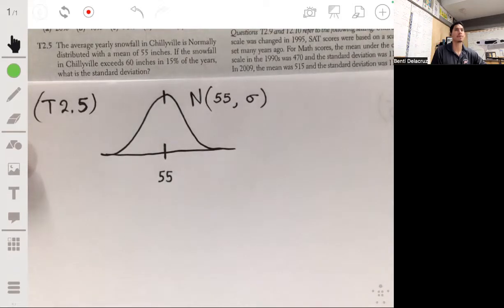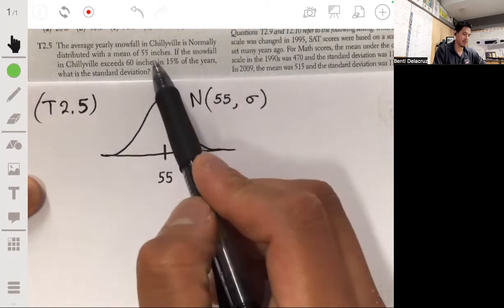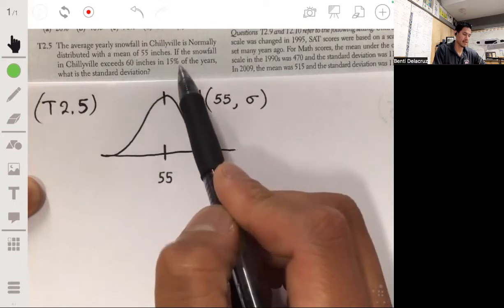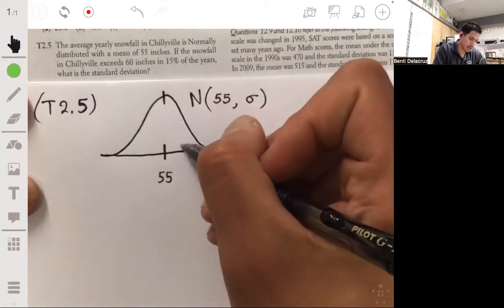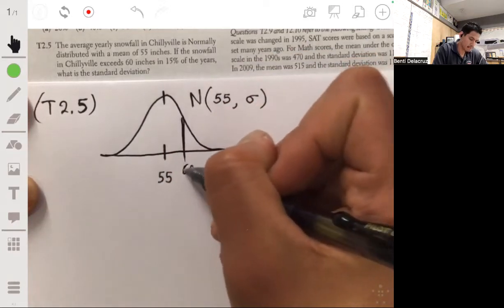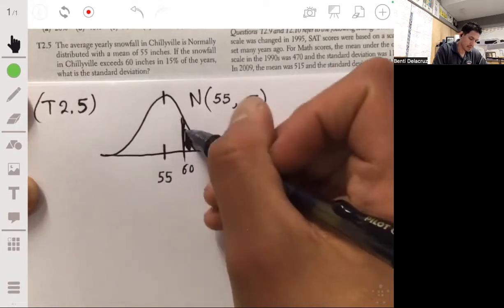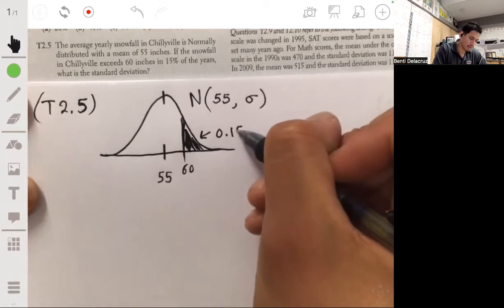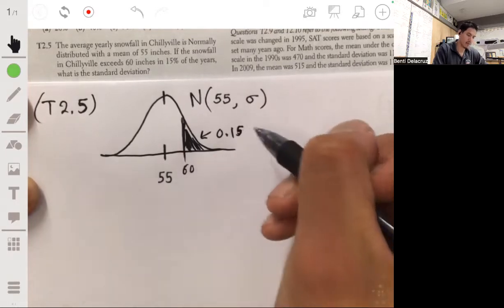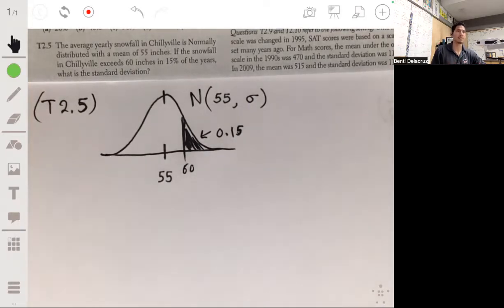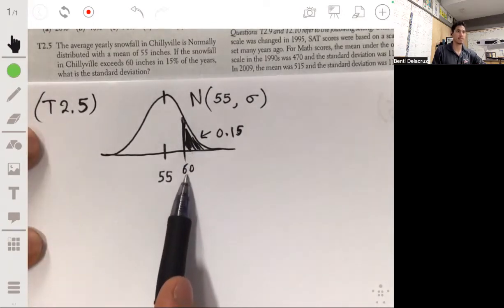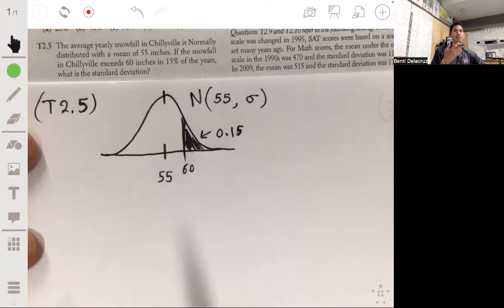Now it tells you that the snowfall exceeds 60 inches in 15% of the years, so we can draw that to the right of 60, 15% of the total area or 0.15 is to the right of that. So what we want to do is find the corresponding z-score when you transform it into the standard normal distribution.